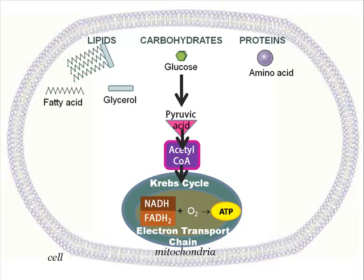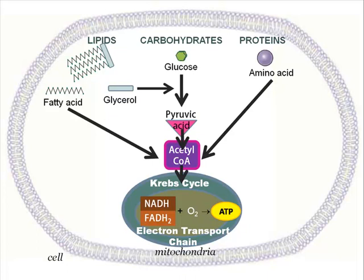Lipids break down to glycerol and fatty acids. The glycerol follows the pathway glucose does. Fatty acids convert into acetyl-CoA to enter the Krebs cycle. Proteins enter as deaminated amino acids and convert to acetyl-CoA to enter the Krebs cycle.